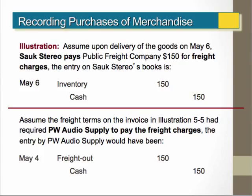In the alternative situation, assuming the freight terms had the seller paying for the freight, the seller would have to pay for the freight and we use the account called freight out — we would debit freight out and credit cash. If the buyer had to pay for the shipping, the buyer includes the cost of shipping in the cost of the inventory. If the seller had to pay for shipping, the seller accounts for the cost of shipping as a selling expense called freight out.